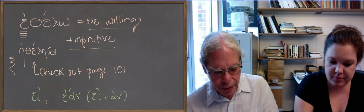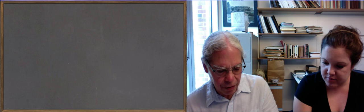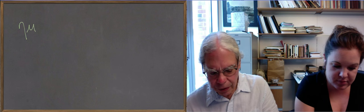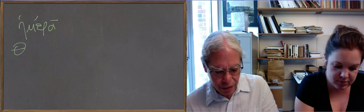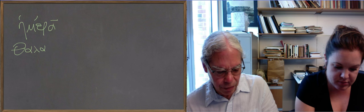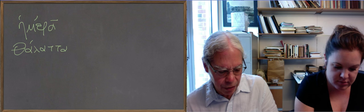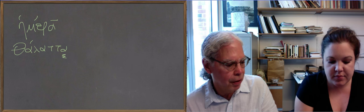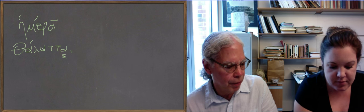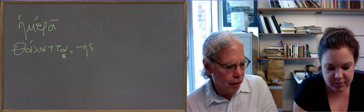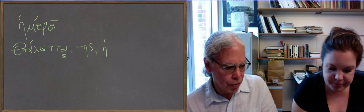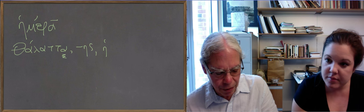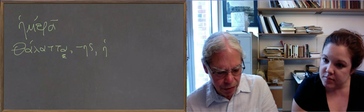The next word is hemera, with a long alpha. It's got a rho before it, so that's why the long alpha, just means day. Thalatta, thalates, this is an example of a certain type of first declension noun that has a short alpha in the nominative singular feminine, and then eta in the genitive and the dative. And you also have that short alpha in the accusative, so it's thalattan. Remember, these are the things that are introduced to you in this lesson.